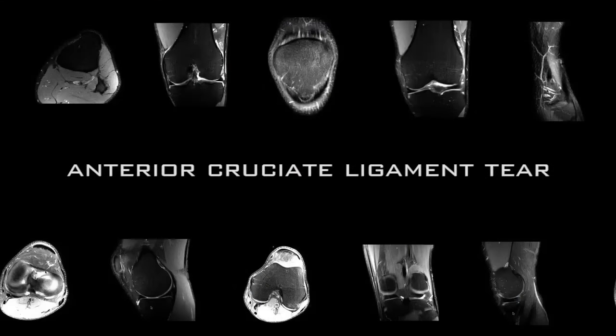The next thing we'll review is ACL tears. We'll go through normal anatomy, what a torn ACL looks like, and also look at some of the secondary signs of an ACL tear. Next we'll move into the evaluation of the cruciate ligaments, starting with the ACL.